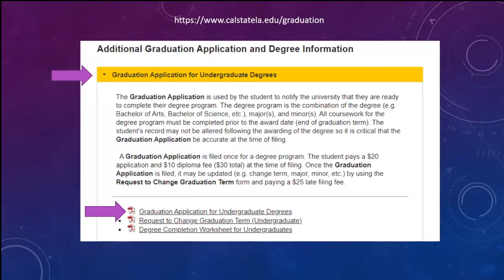Where do you find the graduation application? Honestly, just Google 'Cal State LA graduation application' and it'll pop right up. Or you can go to the graduation office page from the website. There will be a graduation application for undergraduate degrees — just click on the PDF link and you're done.